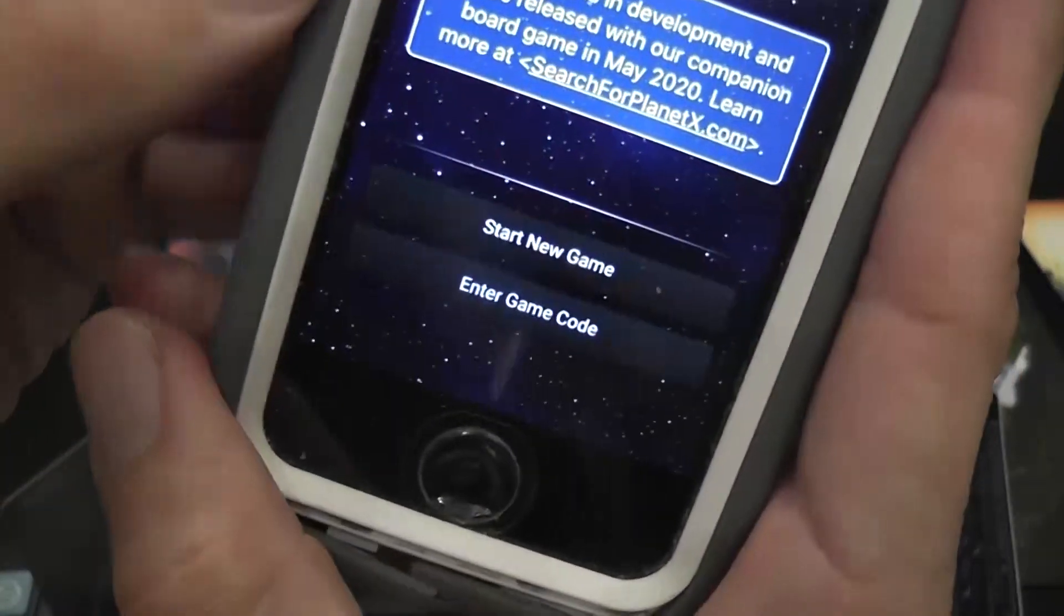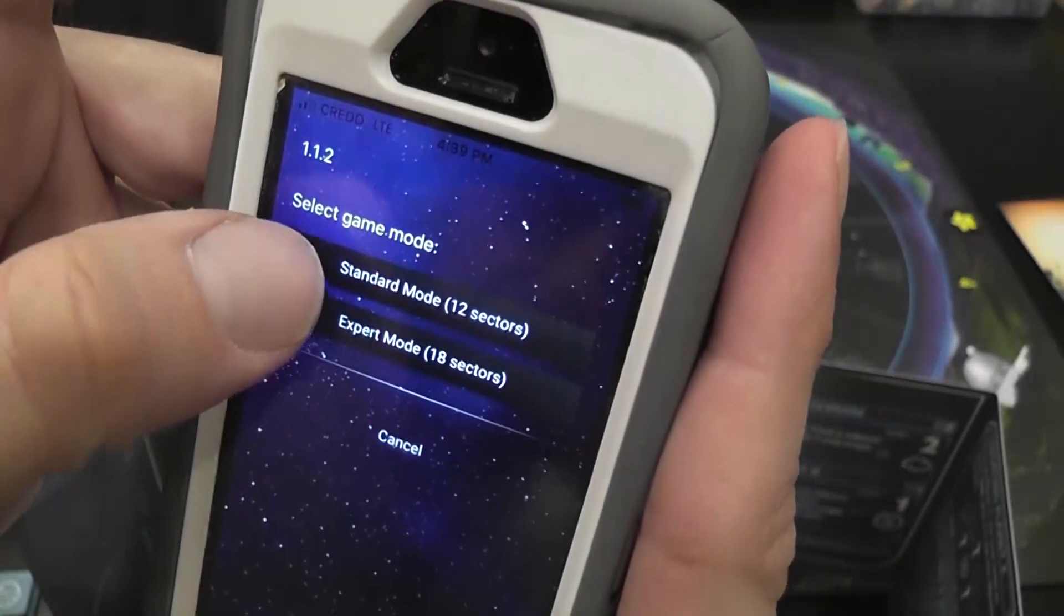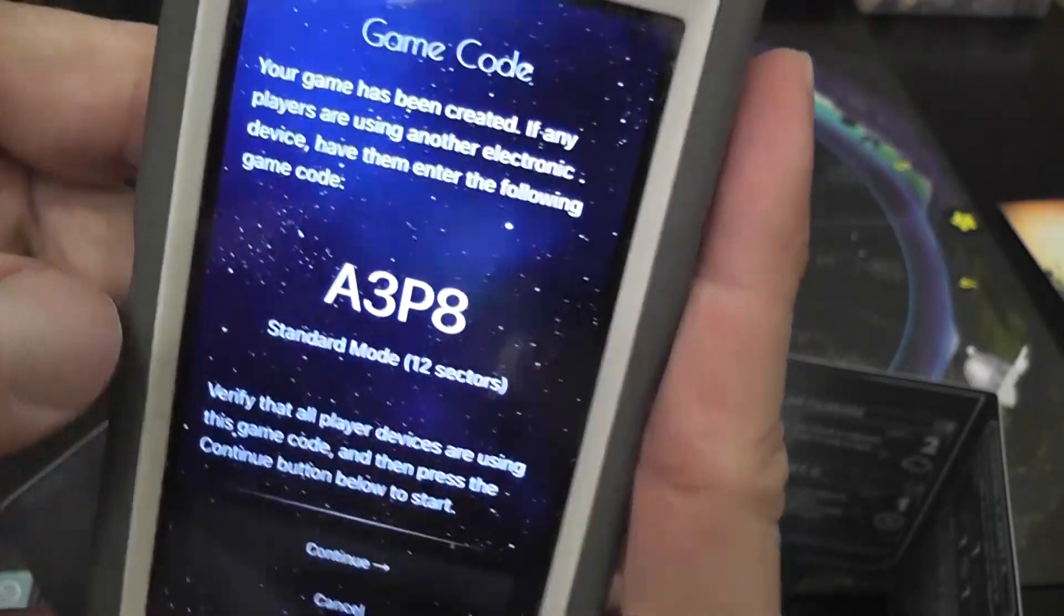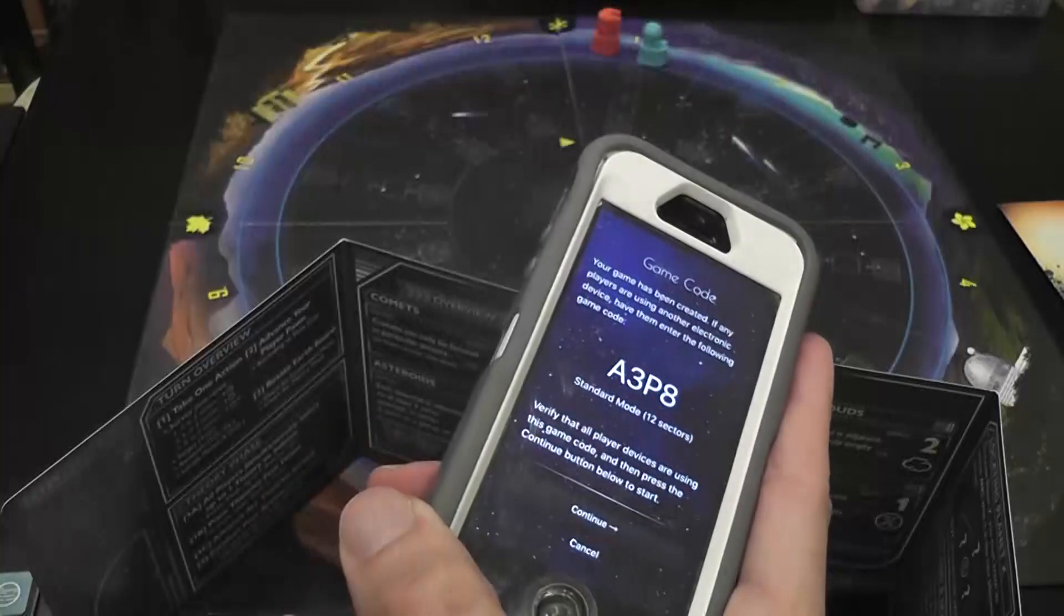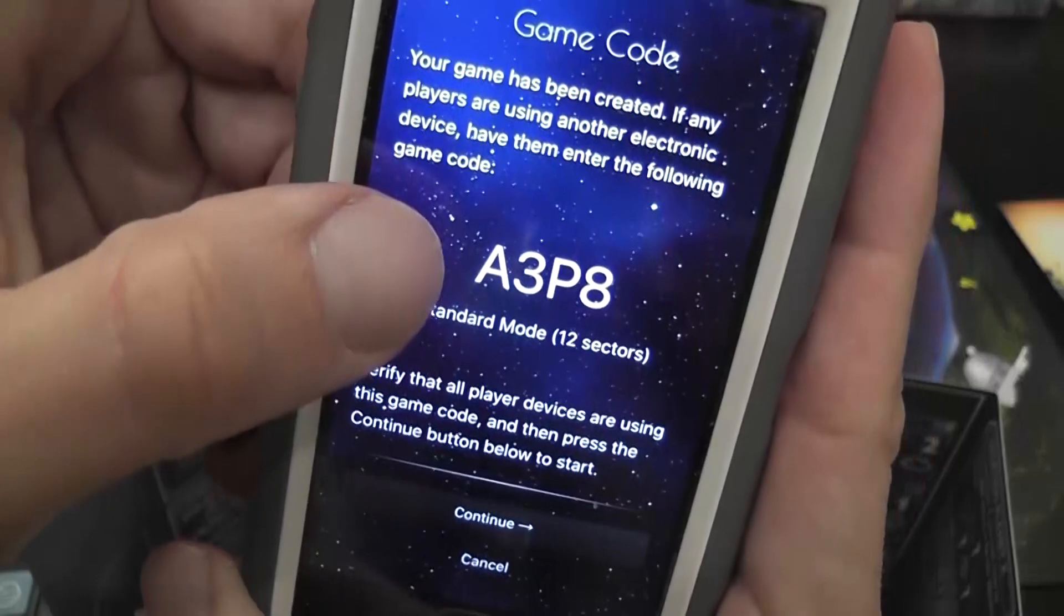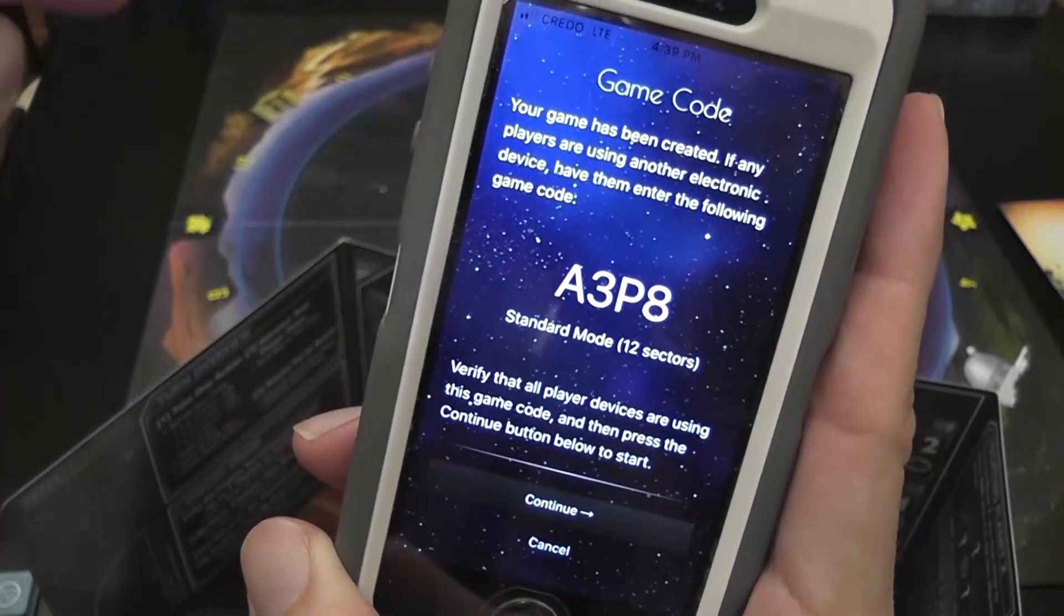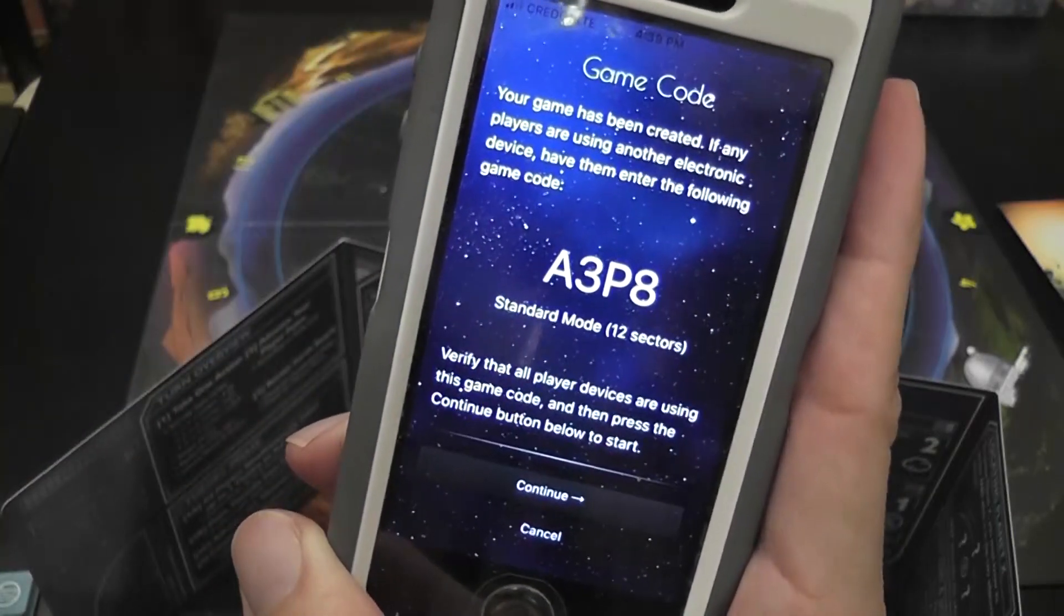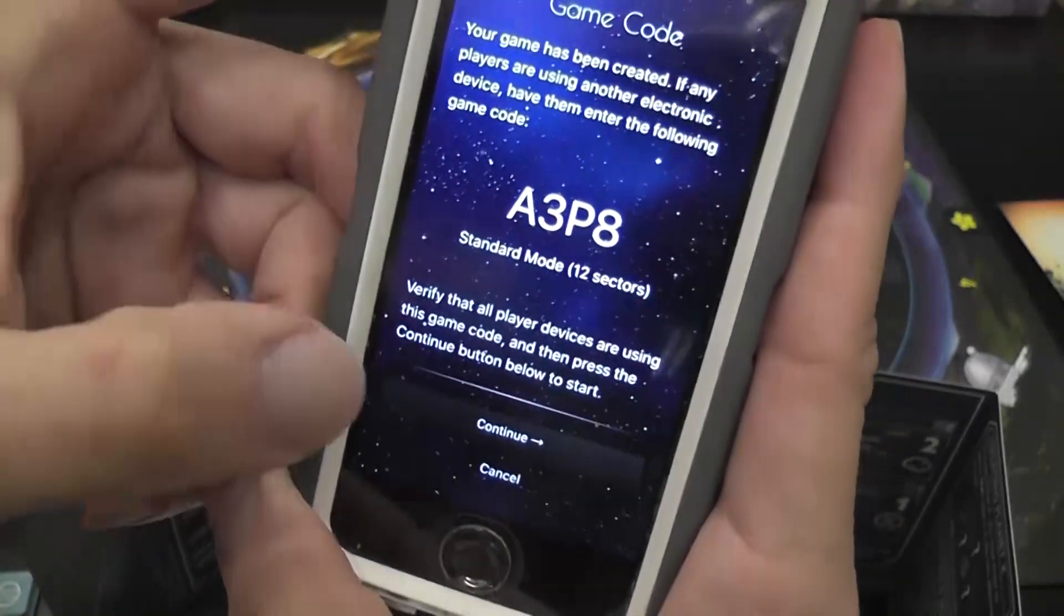So you start a new game. You select if you want standard or expert, and we start a new game. We get the funny sounds. This code is important, because you can play with just one phone and you pass it around, or you can have multiple players. Once you start a game and you generate a code, the other players click on the app and join a game instead of starting one. They insert this code here, and now everybody has access to the same sky, to the same information on their phone. Very convenient.